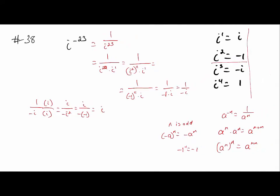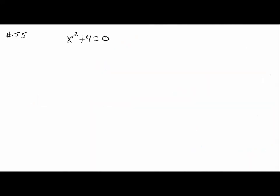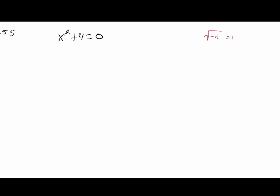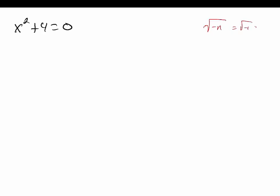Number 55 — just remember that if you have the square root of a negative value, you can separate it. You can use the fact that i is equal to the square root of negative 1.